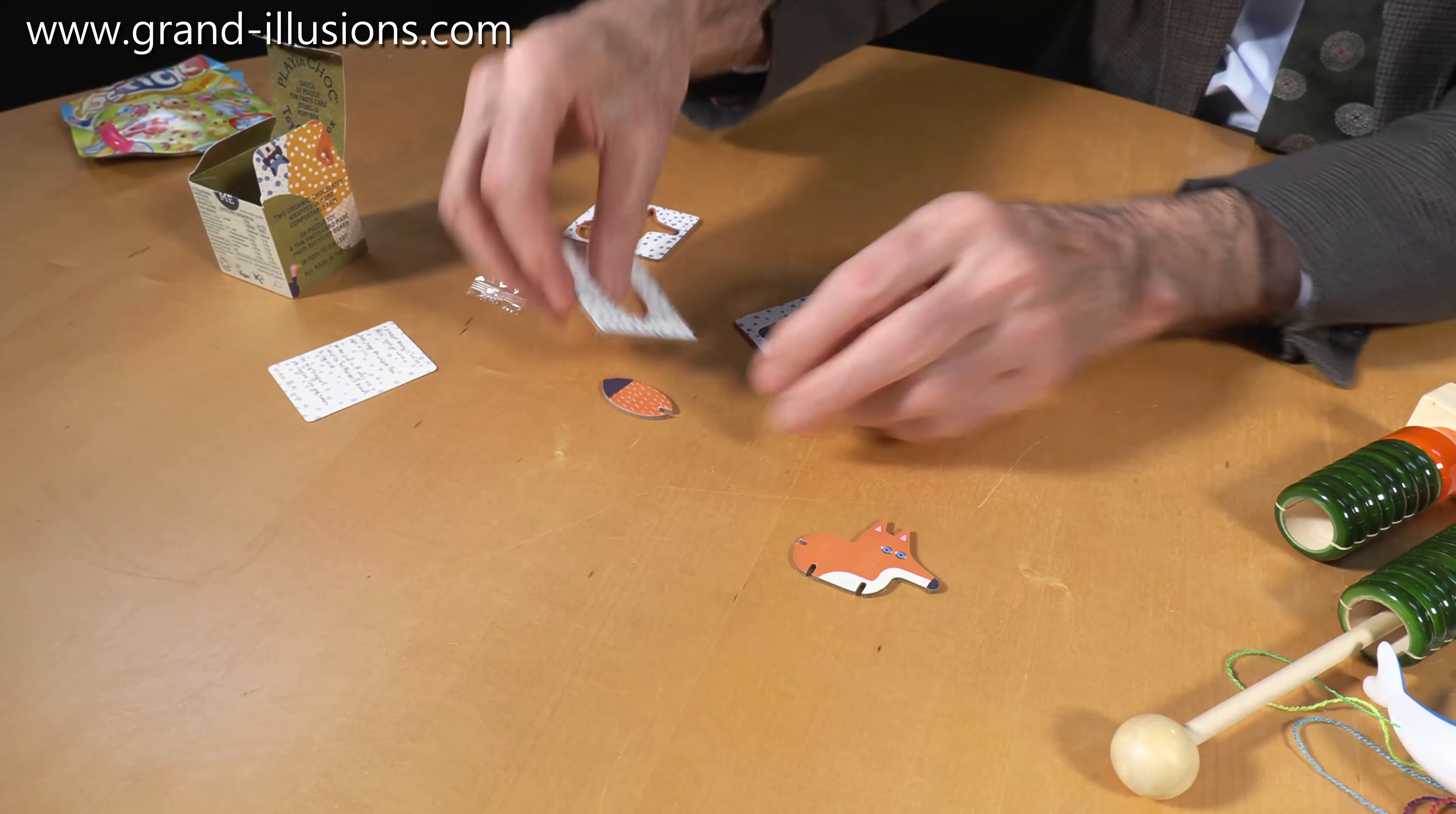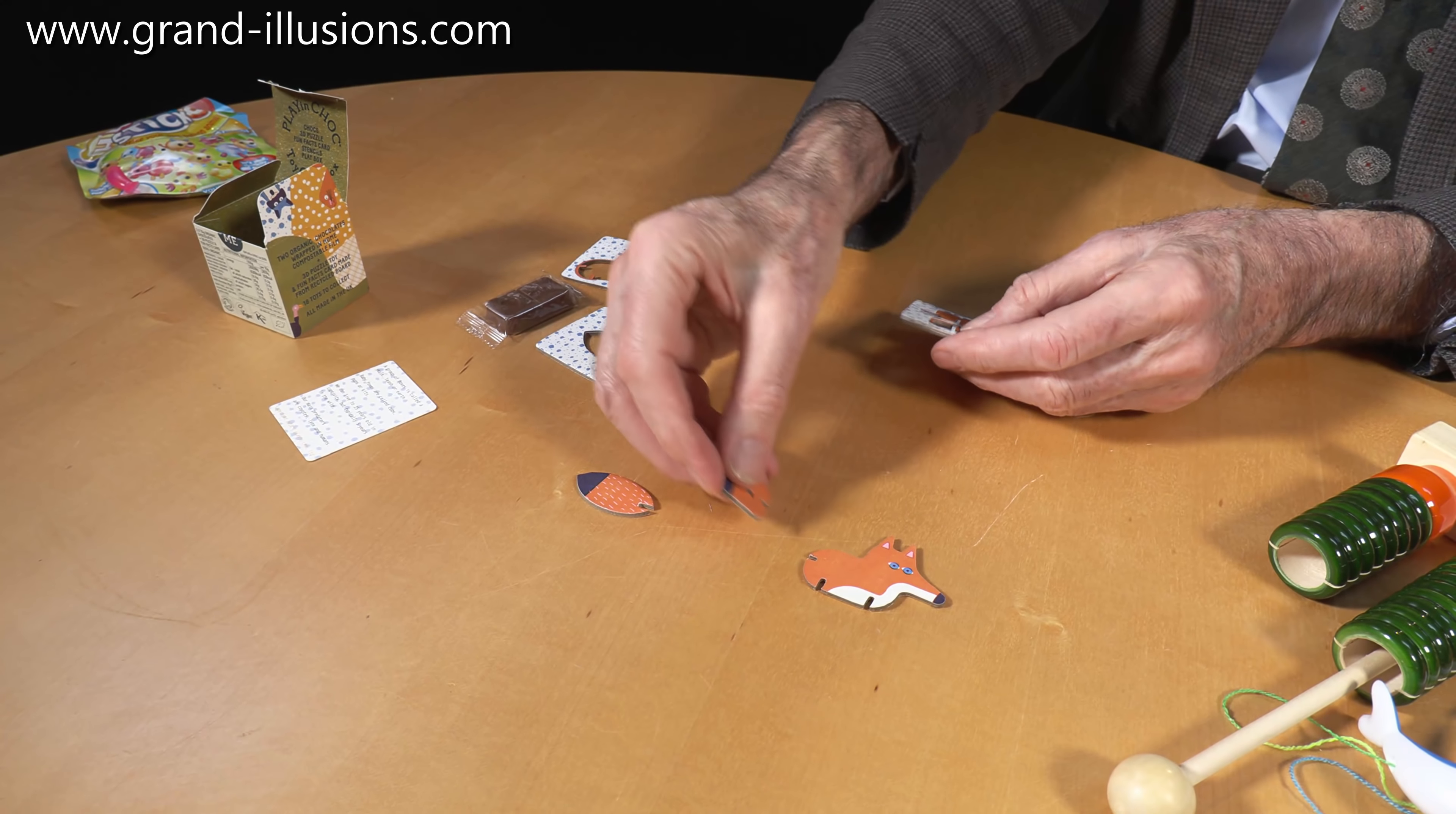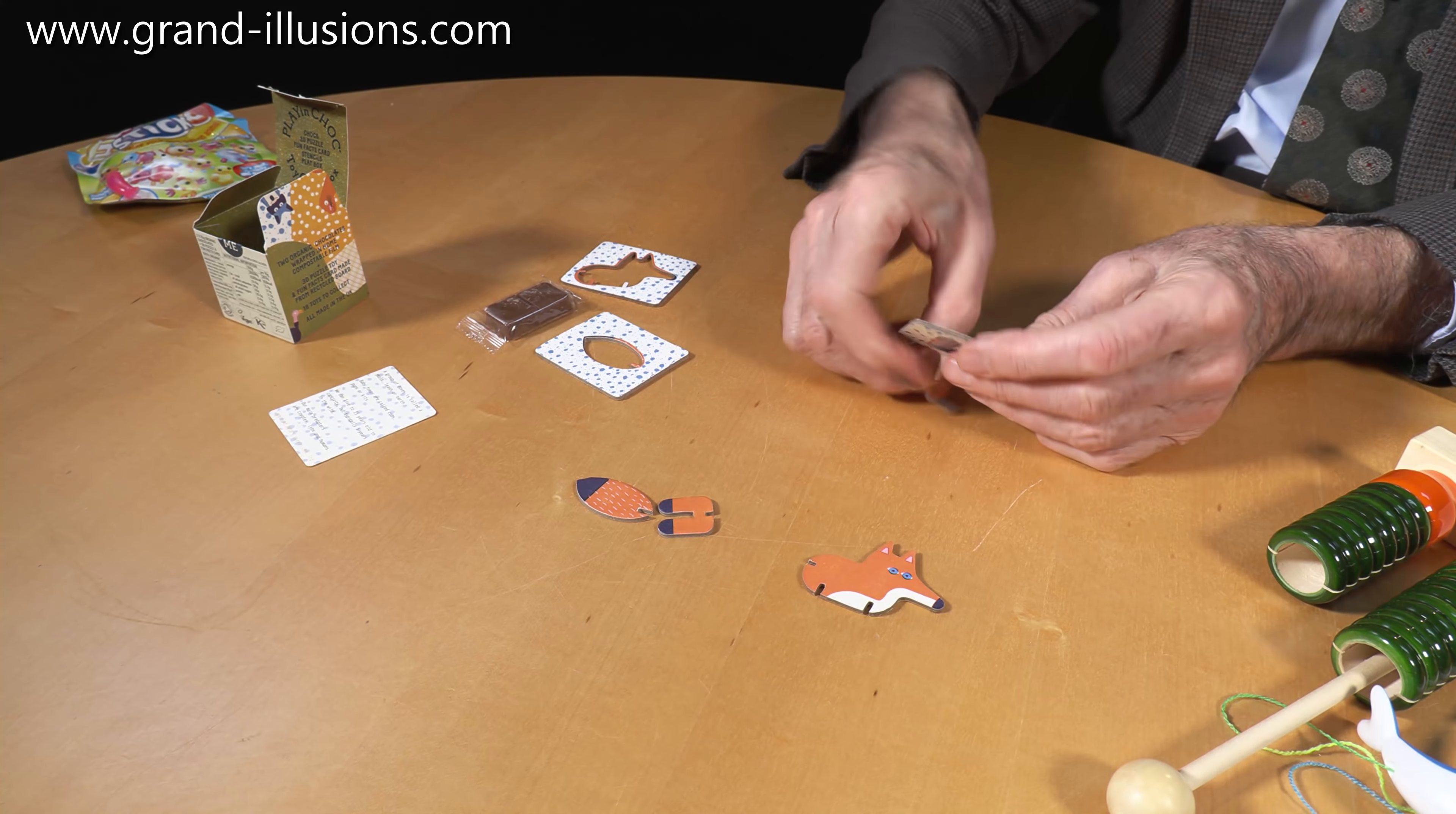Then he's got this tail, which is going to go at the back of the fox, which is over there, and then it's got back legs, I think that one, and then front legs there.